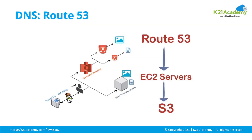Then there's another service called Route 53, which is a Domain Name Service — DNS. You can configure DNS in AWS so that requests coming over the internet can be distributed to backend servers such as EC2, which are Linux or Windows machines, and from there data can be fetched from S3 storage buckets. Route 53 is nothing but a DNS service in AWS.